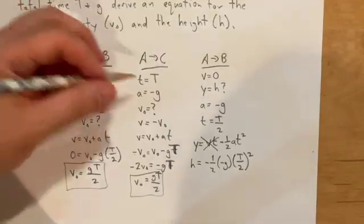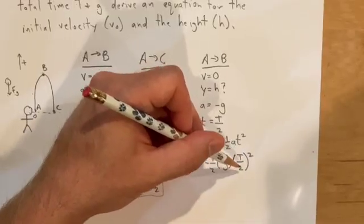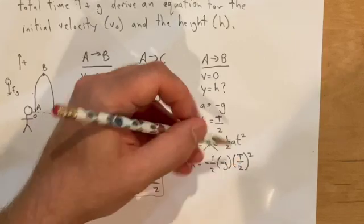Now you have to do some algebra. If I do this times this, I get 1/2 g. This is T² over 4. 1/2 times 1/4 and you get gT² over 8.